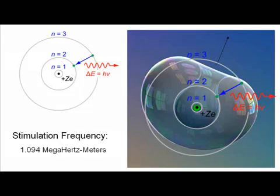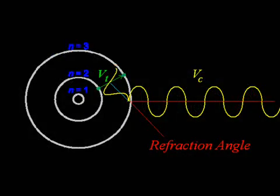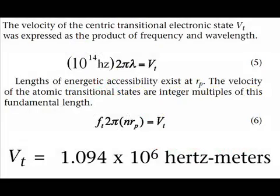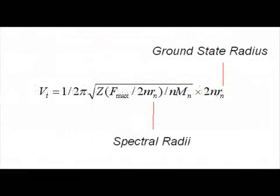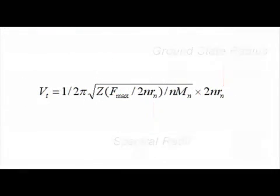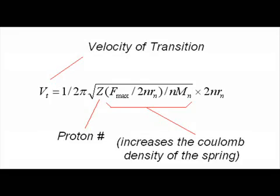During the phase transition between electron states, the fields which bind the atom to each parent state must be released in order to reconfigure into the daughter state. During this quantum transitional phase, the electron travels at a specific velocity. This velocity is the same for all atoms, although the dimensions and frequencies change according to the change in density between the different nuclei.